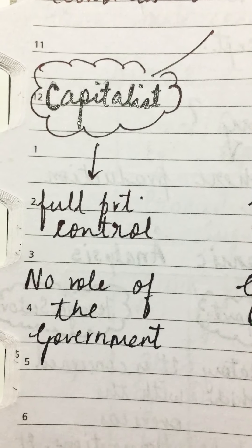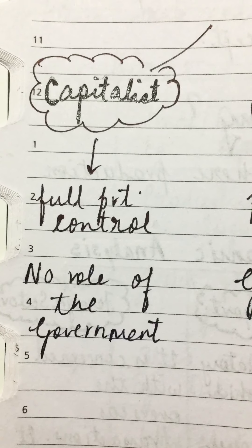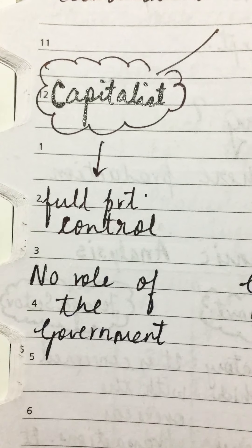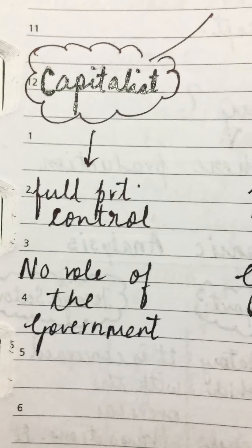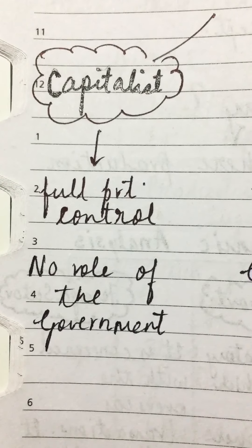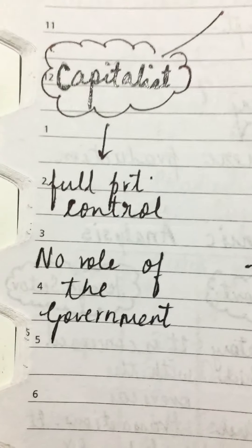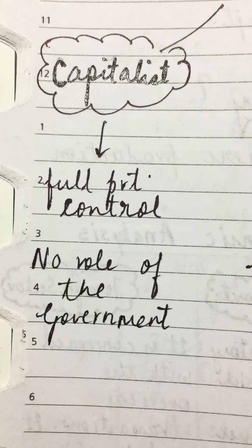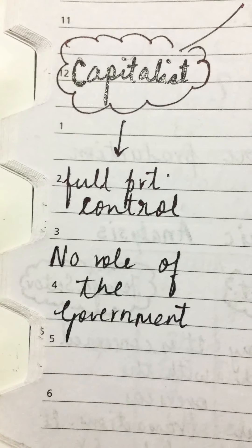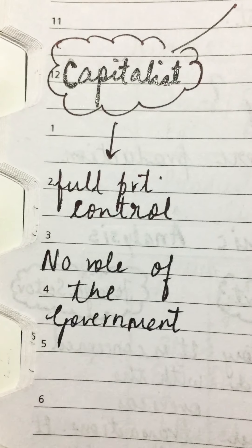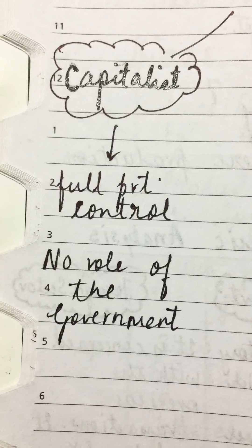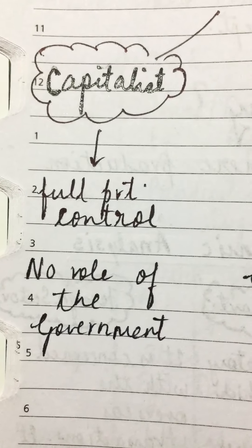Talking about demerits, there is class conflict because of competition among many producers. Unemployment has increased in the capitalist economy - because while there is incentive to work hard, those who don't perform face retrenchment, leading to unemployment. There is exploitation of workers and economic fluctuations due to no control. There is inequality in distribution of income and wealth - everyone tries to create their own monopoly, leading to a growing gap between poor and rich.